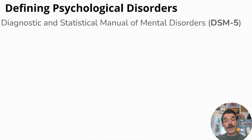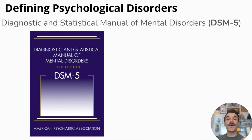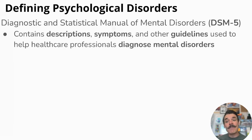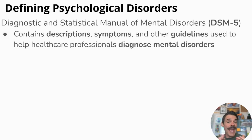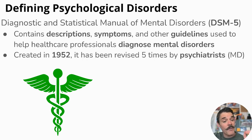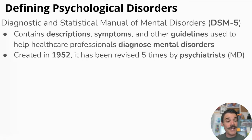For defining psychological disorders, we use the DSM-5 — the Diagnostic and Statistical Manual of Mental Disorders, revised five times. It contains descriptions, symptoms, and guidelines for healthcare professionals to diagnose and treat mental disorders. It was created in 1952 and has been revised five times by psychiatrists, who are medical doctors with a medical degree and can also prescribe medicine.